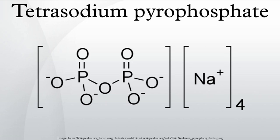Tetrasodium pyrophosphate is produced by the reaction of food-grade phosphoric acid with sodium carbonate to form disodium phosphate, which is then heated to 450 degrees Celsius to form tetrasodium pyrophosphate.